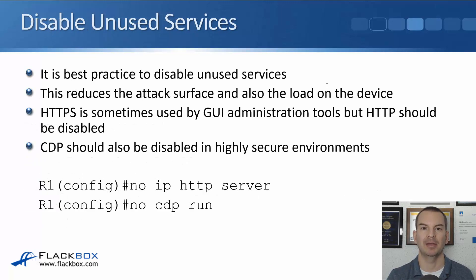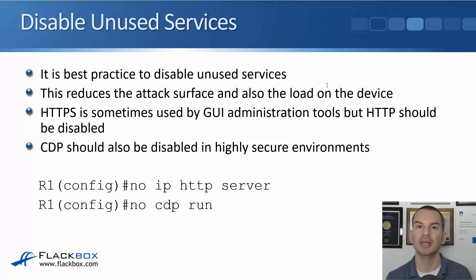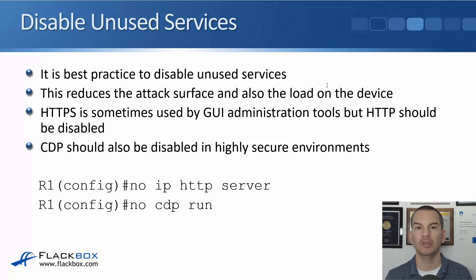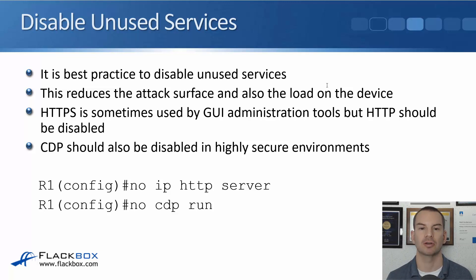Next thing to cover as a best practice is disabling unused services. By disabling unused services, that reduces the attack surface. For example, say that you've got HTTP running on the router and a hacker discovers that there's a new exploit that attacks HTTP on Cisco routers — well, if you're not running HTTP, you're not susceptible to that attack. Another benefit is it reduces the load on the router or switch, because if it's not running the service, it doesn't have to give CPU cycles to do that. Best practice is to disable all of your unused services.